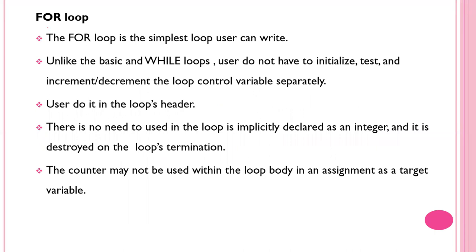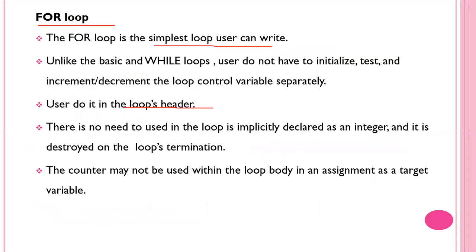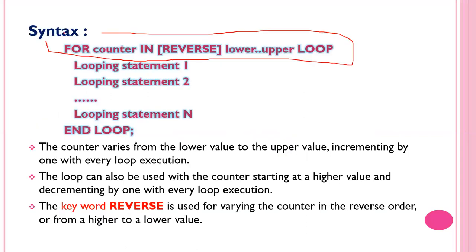The next loop is the for loop — it is the simplest loop a user can write. Unlike the other two types of loops, the user does not have to handle initialization, testing, increment, and decrement separately. All of this can be done with the help of the loop header. FOR is a keyword, LOOP is a keyword, IN is also a keyword, and REVERSE is also a keyword. The for loop allows initialization, test, increment, and decrement all in the loop header.